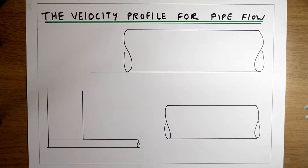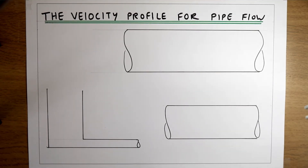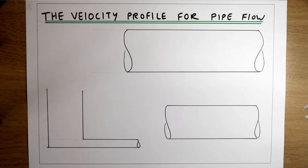So first of all, what do we mean by a non-ideal fluid? In the last few videos we've been looking at examples where we've been applying Bernoulli's equation between two points, assuming no losses, so that energy — or the useful energy — is conserved between two points.